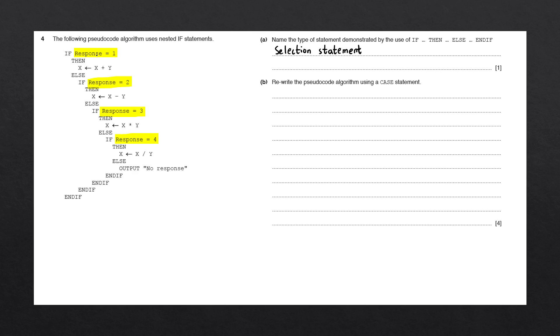The first one tests if response is equal to one. The second one tests if response is equal to two. Then we test if response is equal to three. And finally, if response is equal to four.